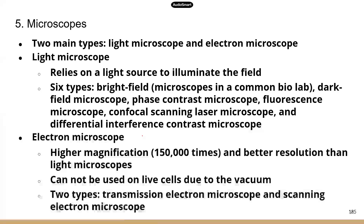The last topic for this lesson is microscopes. It looks like there is a lot to know, but in terms of what ATI can ask, it's really limited to just a few main questions. First, you need to know that microscopes are the equipment we use to study microorganisms, because with our naked eye those organisms are too small to see. Microscopes can magnify organisms or specimens and provide really great resolution. There are two main types: light microscope and electron microscope.